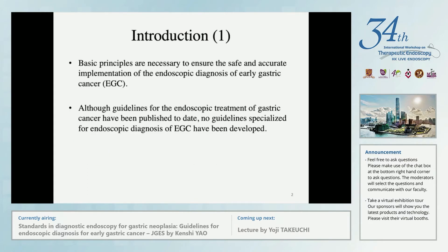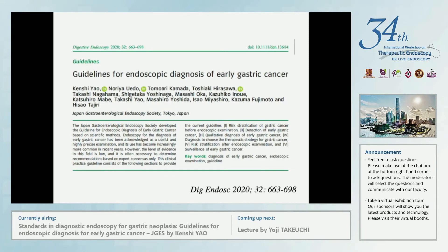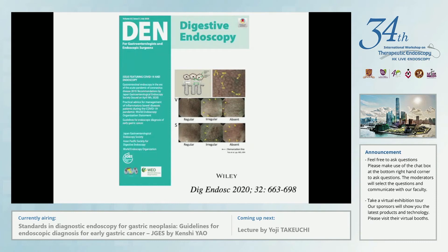Basic principles are necessary to ensure the safe and accurate implementation of the endoscopic diagnosis of gastric cancer. Although guidelines for the endoscopic treatment of gastric cancer have been published to date, no guidelines specialized for endoscopic diagnosis have been developed. The JGES Guideline Committee decided to newly develop a guideline based on scientific findings, and the English version was just launched in July this year.